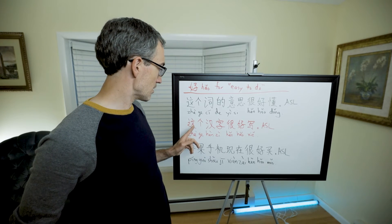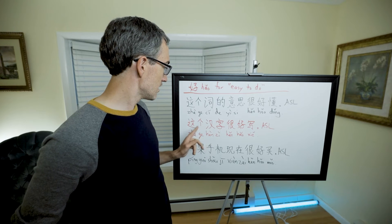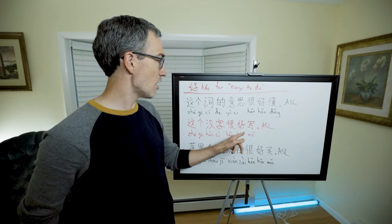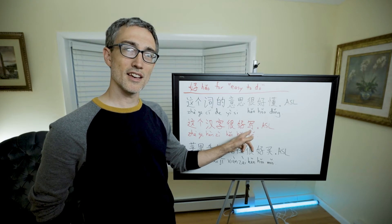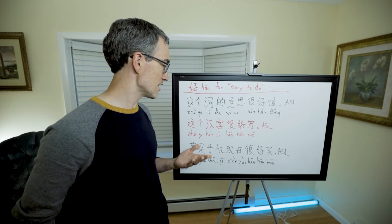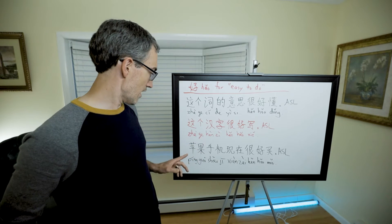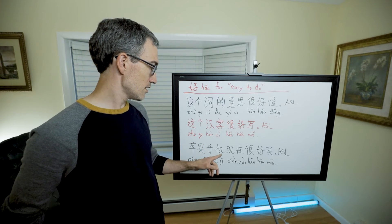Here's another example from Allset Learning. 这个汉字很好写. 写 means to write, so what does this mean? This Chinese character is easy to write.